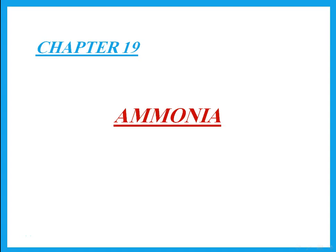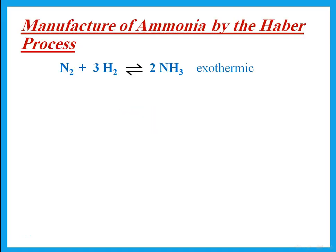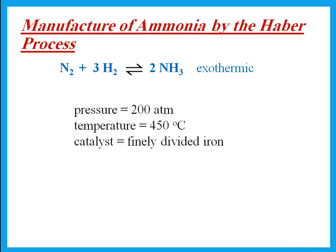Let's talk about ammonia. We manufacture it by a process called the Haber process, which is the reversible reaction between nitrogen and hydrogen to form ammonia. The forward reaction is exothermic. The conditions for this reaction are a pressure of 200 atmospheres, a temperature of 450 degrees Celsius, and the catalyst is finely divided iron.